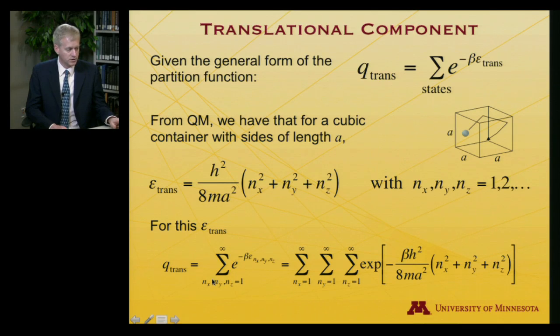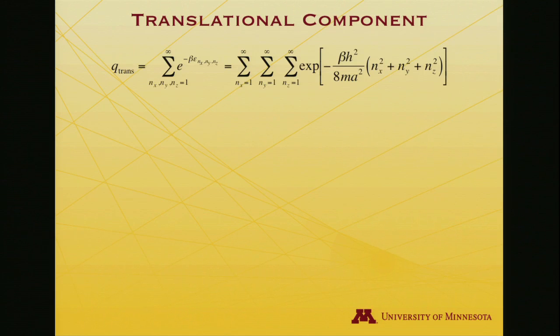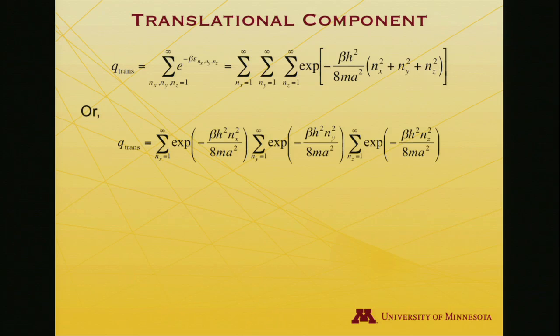Given those allowed energy levels, we simply substitute those in to the expression for the partition function. I could write this as a single sum, e to the minus beta that epsilon, and now I'll just write in what that epsilon is—this is just explicit. So here's beta and then here's all the other terms that are written up there for the allowed energy levels.